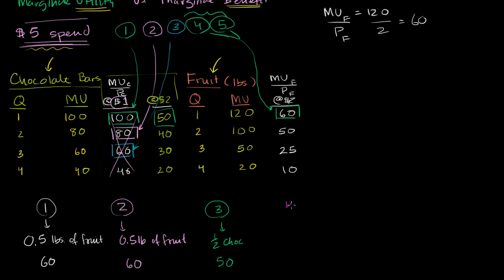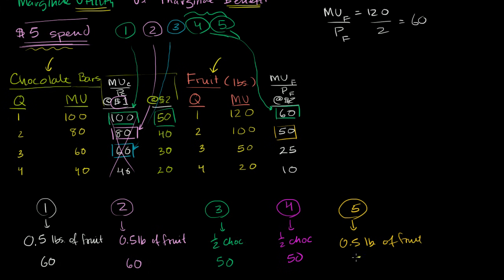For my fourth dollar, I can buy up to a whole bar at this marginal utility per dollar, so I'll buy another half chocolate bar — now I have a whole chocolate bar — continuing at 50 utility units per dollar. Then for my fifth dollar, I don't want to buy any more chocolate bars because my marginal utility per dollar has gone down after exhausting that level. But I can still buy fruit at that same 50 marginal utility per dollar. Since fruit is $2 per pound, I can buy another half pound of fruit at a marginal utility per dollar rate of 50.